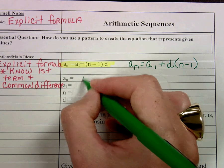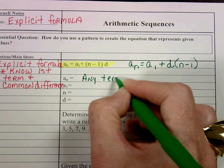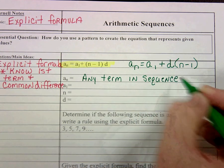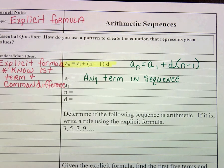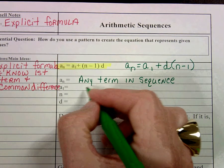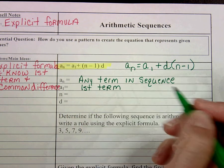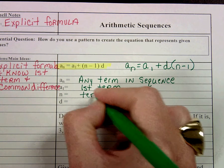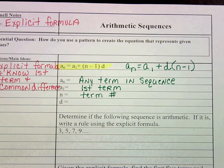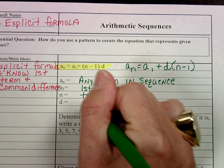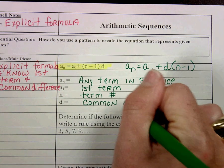A sub n represents any term in the sequence, whatever we're looking for. It could be a sub 19, it could be a sub 20, a sub 34, whatever particular term we're looking for. A sub 1, 1 obviously refers to the first term in the sequence. n would be the term number. So if I was looking for a sub 19, then I would plug 19 in for n so that I could evaluate the formula and figure out the 19th term.